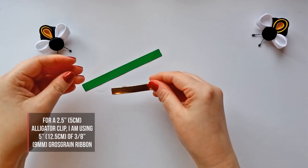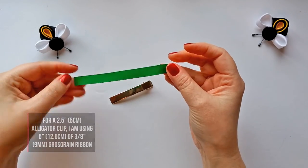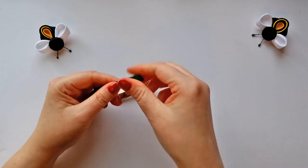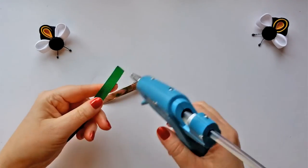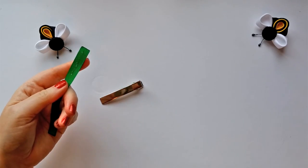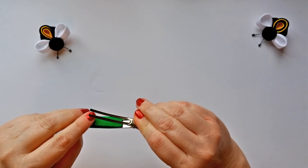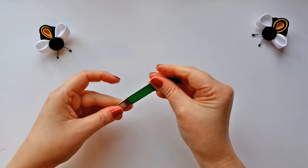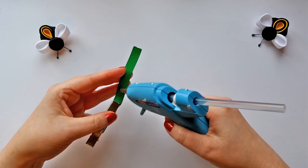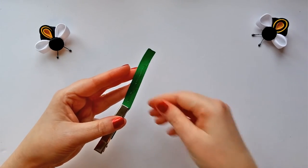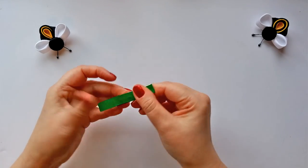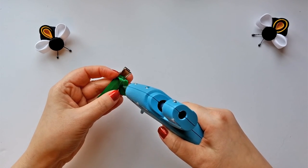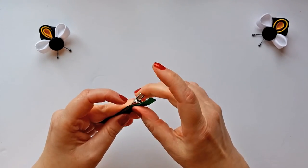To attach your bumblebee to an alligator clip you'll need a two and a half inch alligator clip and five inches of three eight inch gross grain ribbon. Heat seal both ends of the gross grain ribbon. Apply a thin strip of hot glue to one end of the ribbon and attach it to the underside of the top of your alligator clip. Then apply more hot glue to the bottom of the ribbon and press that down onto the top of the clip. Apply glue to the last of the ribbon and then tuck it down and around the handle of the clip.